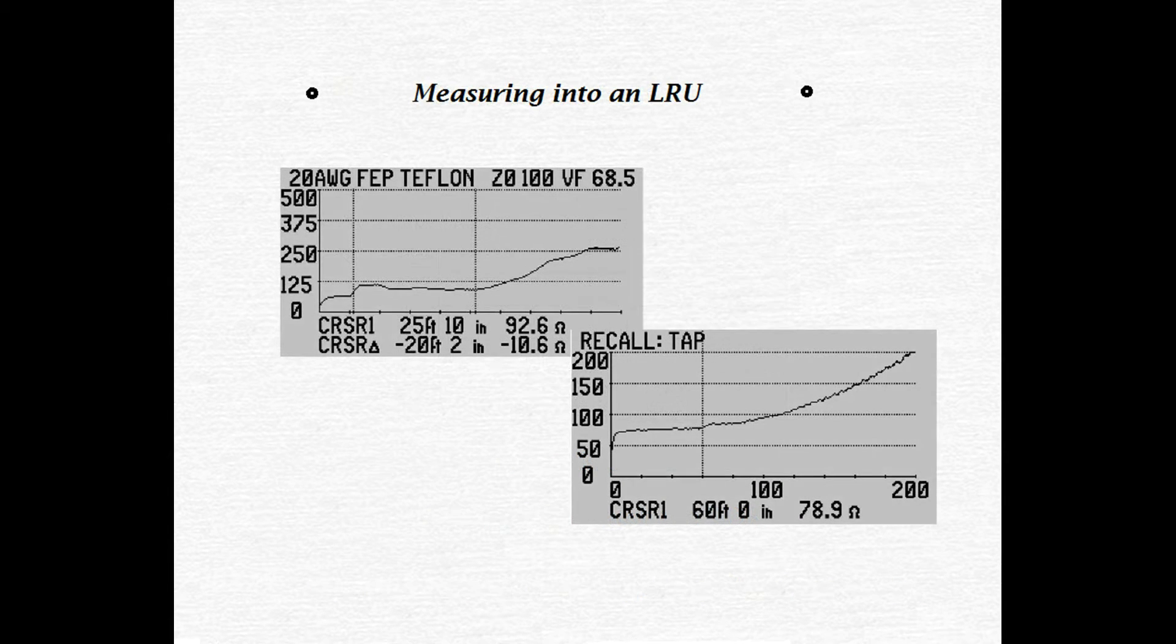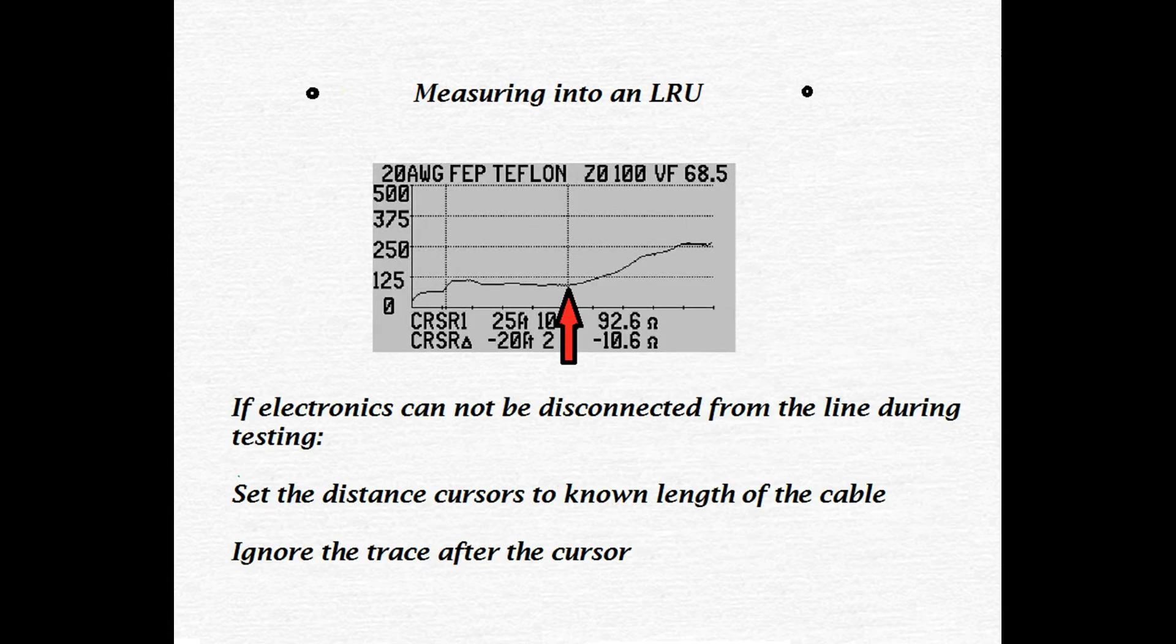I've mentioned it before, but here's a workaround. Try not to transmit into an impedance matching device, or an LRU. However, if there's no way around it and you have to transmit into an LRU, do some research and find out the length of the cable you're testing. Then set the cursor to the known length of the cable. From this point on, ignore anything on the trace after your cursor.